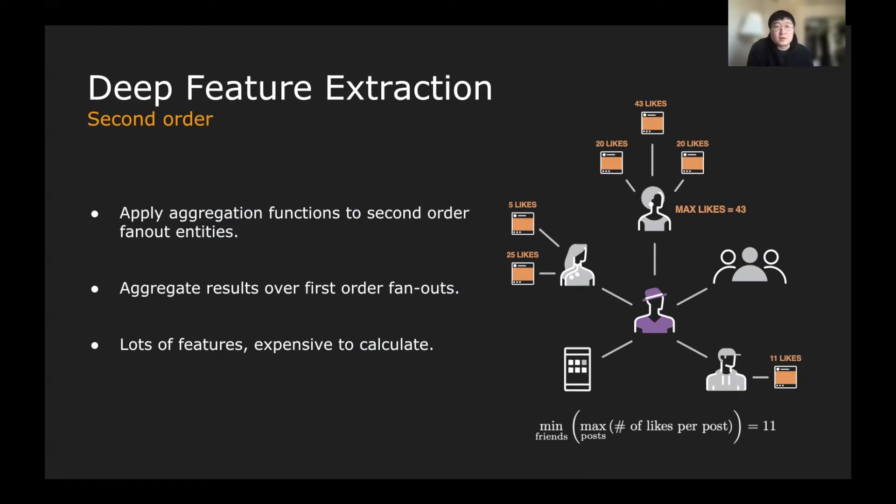So why do we do this? We have two major reasons. The first reason is that it is much more difficult for the attackers to alter the features from their neighboring accounts, even from the neighbors of neighbors' accounts. While it's easy for them to change their own location, gender, and age information, it becomes exponentially more difficult to change the same information for their second order of fanout entities. Secondly, it's because by applying the different aggregation functions on many different types of entities and their features, we can easily create thousands of features using such standard format.